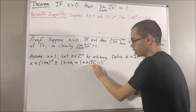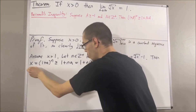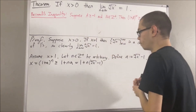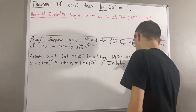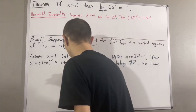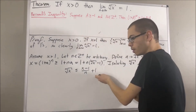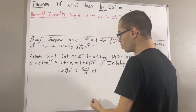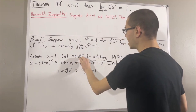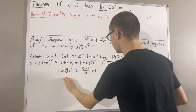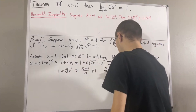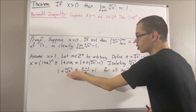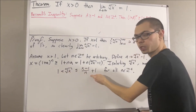Now, if we solve for the n-th root of x — subtracting 1 to the other side, dividing n to the other side, and then adding 1 to the other side — we get this inequality. As we mentioned before, the n-th root of x is bigger than 1. And so, we have shown that given any positive integer n, this inequality is true — so this inequality is true for all positive integers n. Thus, we have shown that the n-th root of x is squeezed between two sequences which converge to 1.